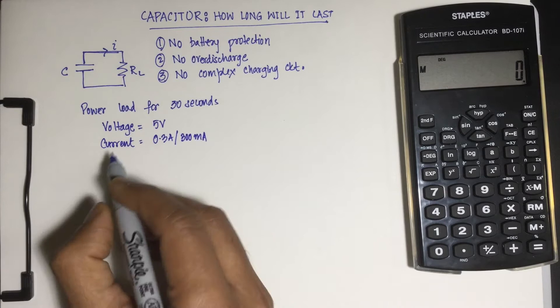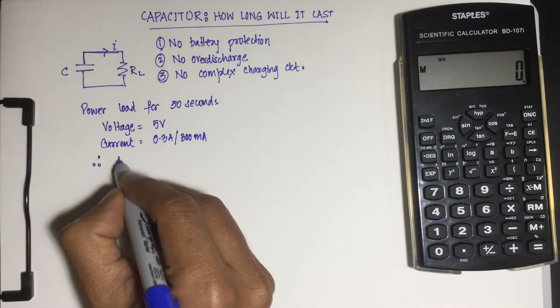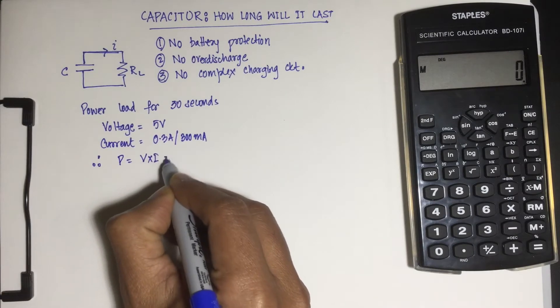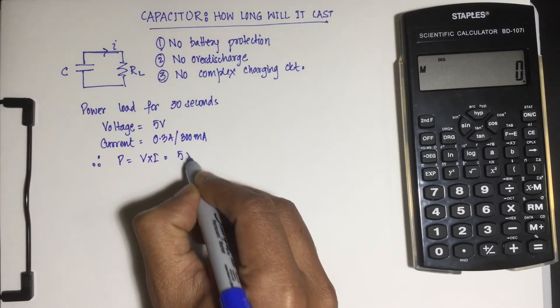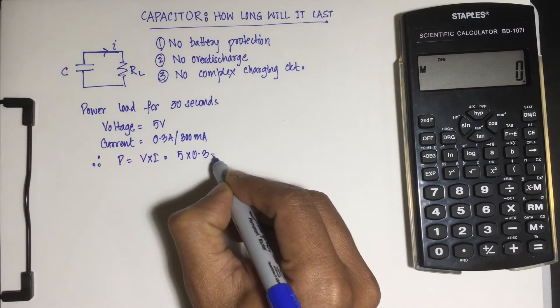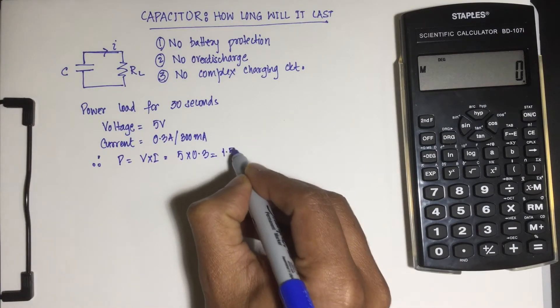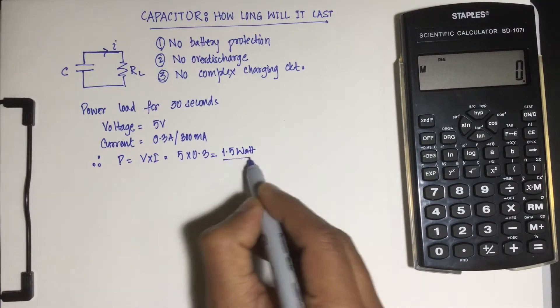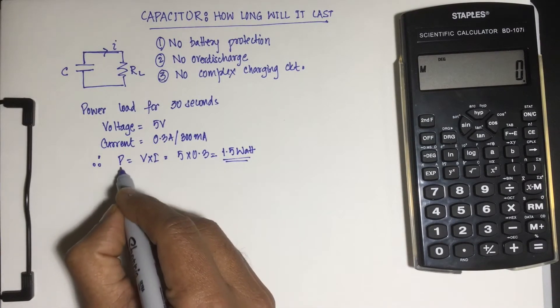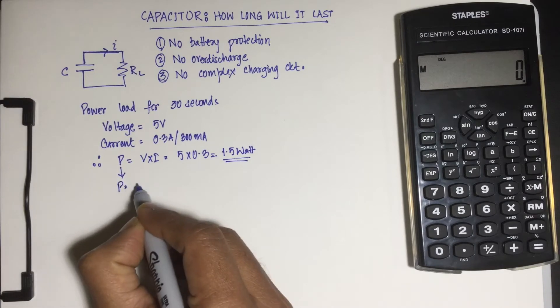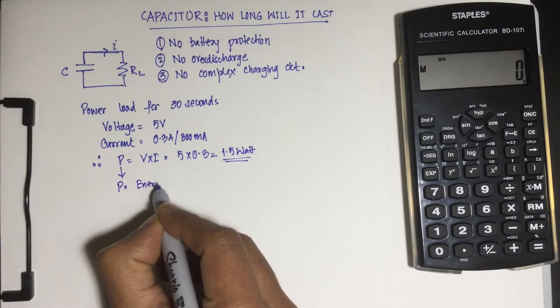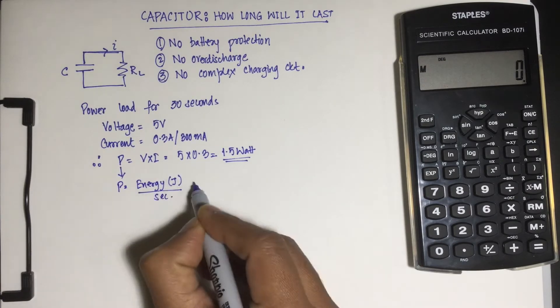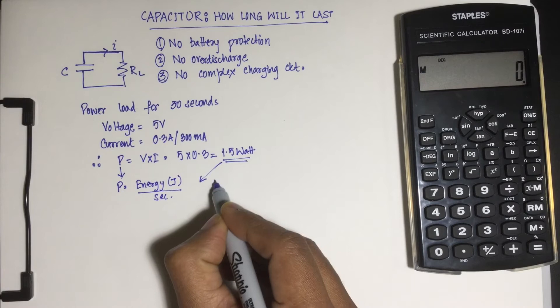If we have to power this, we compute power is equal to voltage into current. That's 5 into 0.3 amps which is 1.5 watts. What is ability to consume energy? Power would be equal to energy consumed or given per unit of time. Energy is in joules.